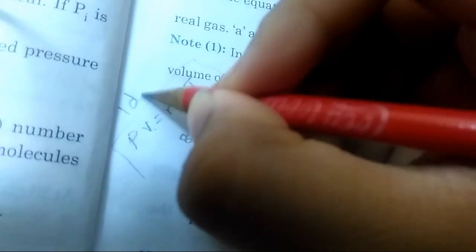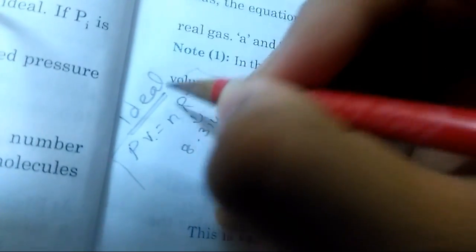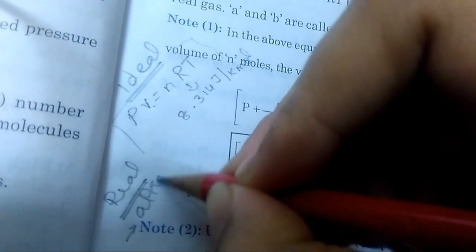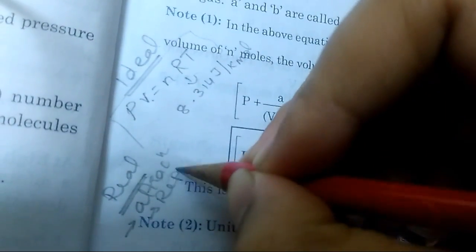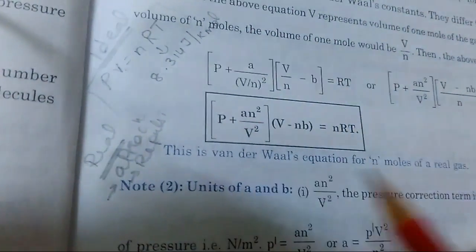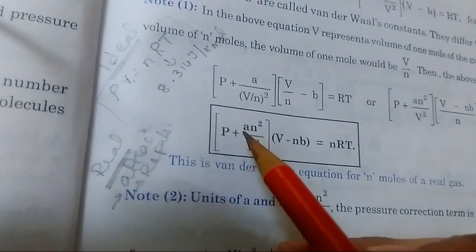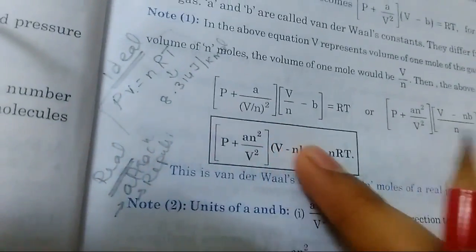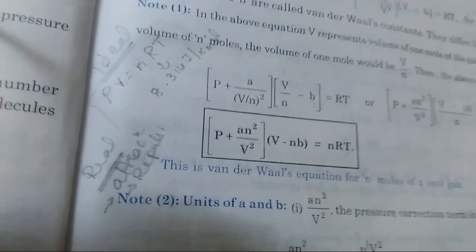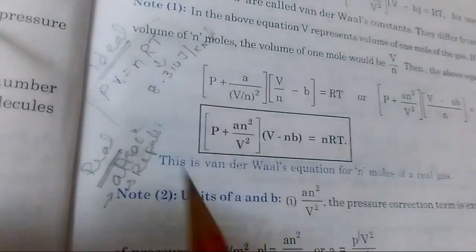This law was given and they said it's only applicable for ideal gases. In real gases, there are a lot of attractive forces between molecules as well as repulsive forces. To account for those things, we have some correction factors. These are the final correction factors which have been added to your equation to obtain the real gas equation.